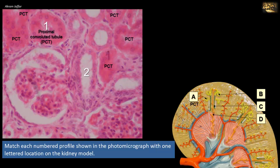Profile number two in the photomicrograph is a distal convoluted tubule. It may be differentiated from nearby proximal convoluted tubules by the following features: first, the absence of a brush border, resulting in a larger, more clearly defined lumen. Also, more nuclei are seen in transverse section, since the cells of the distal convoluted tubule are smaller than those of the proximal convoluted tubule.